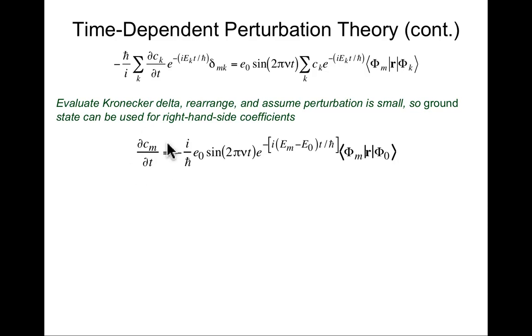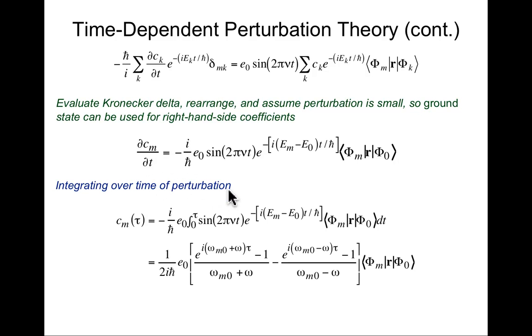Here's what I'm really interested in. I want to know how is the coefficient for state m evolving with time. Is it becoming big, in which case I might expect to land in that state, or is it not becoming big? So I will integrate over the time of the perturbation. I integrate both sides from 0 to some value tau, where tau is how long I turned on the radiation field. In the case of c_m, this is a pretty trivial integral to do, so I just get c_m at time tau. And then here's this integral over here actually written out. The integral from 0 to tau, sine 2 pi nu t, e to the minus this thing to the t power, this is just a number that I can pull out front, dt. This is not an integral that you've probably seen before. You'd have to go look that one up in a table. I'm just going to ask you to accept on faith that here's the solution to that integral.